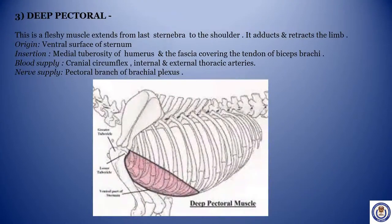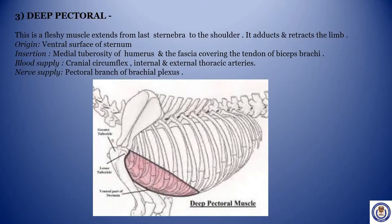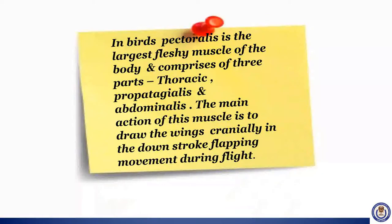Deep pectoral is a fleshy muscle extending from the sternum to the shoulder. It adducts and retracts the limb. Origin: ventral surface of sternum. Insertion: medial tuberosity of humerus and the fascia covering the tendon of biceps brachii. Blood supply: cranial circumflex, internal and external thoracic arteries. Nerve supply: pectoral branch of brachial plexus. In birds, pectoralis is the largest fleshy muscle of the body and comprises three parts: thoracic, propatagialis and abdominalis. Its main action is to draw the wing cranially in the downstroke flapping movement during flight.